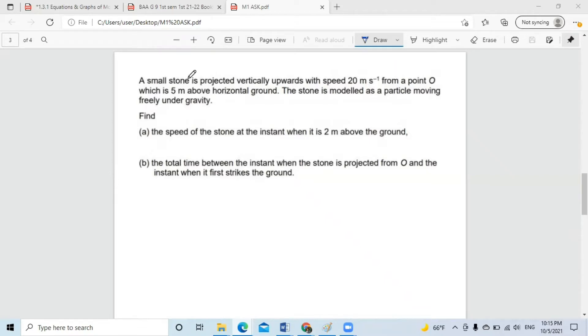A small stone is projected vertically upwards with a speed of 20 meters per second from the point O which is five meters above the horizontal ground. So this is point O. It's five meters above the horizontal ground.